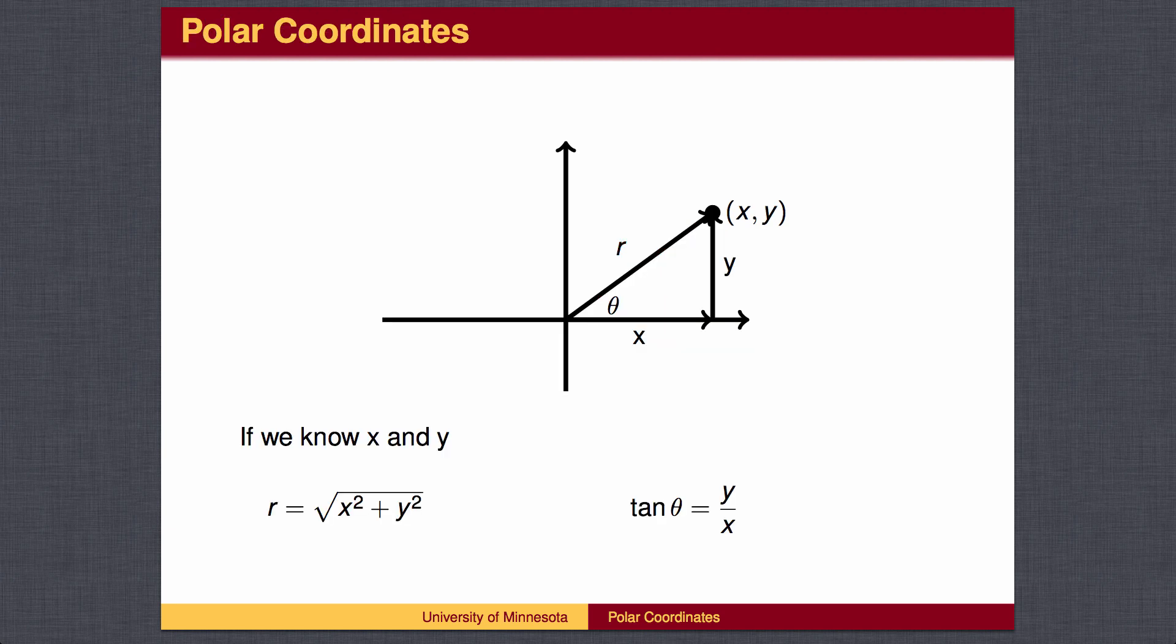In general, the Pythagorean theorem gives r squared equals x squared plus y squared, so r is the square root of x squared plus y squared. The tangent of theta is y over x, so the inverse tangent of y over x will give the angle, with one bit of caution.